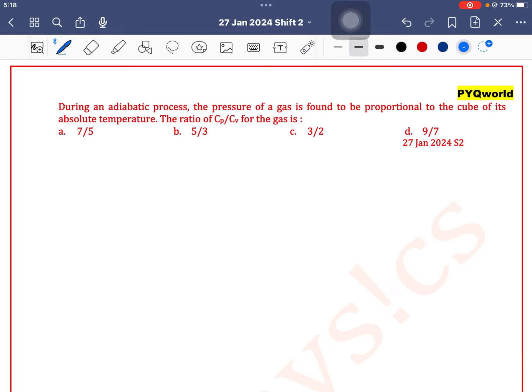During an adiabatic process, the pressure of a gas is found to be proportional to cube of its absolute temperature. The ratio of Cp by Cv for the gas is...